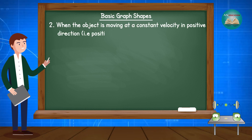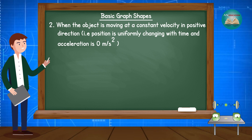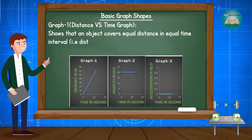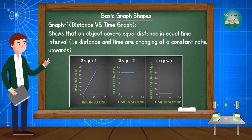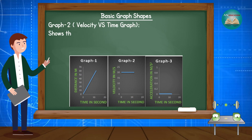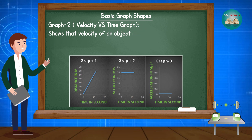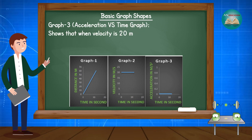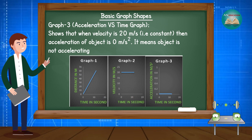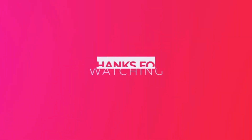Second, when the object is moving at a constant velocity in the positive direction — position is uniformly changing with time and acceleration is 0 m/s². The distance-time graph shows the object covers equal distance in equal time intervals, changing at a constant rate upward. The velocity-time graph shows velocity at 20 m/s, horizontal above the time axis. The acceleration-time graph shows acceleration is 0 m/s², meaning the object is not accelerating.